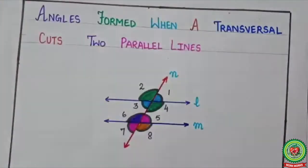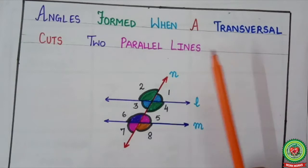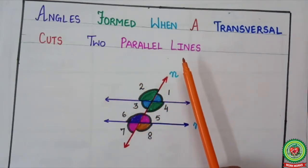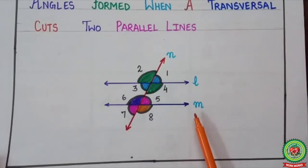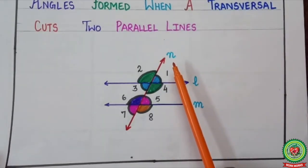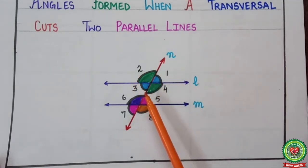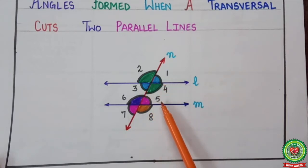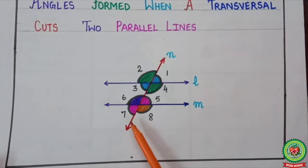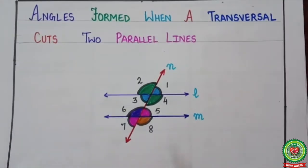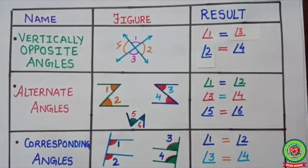How many angles will form when a transversal cuts two parallel lines? Here l is parallel to m and n is the transversal. Let's count the number of angles formed: one, two, three, four, five, six, seven, eight. So eight angles are formed when a transversal cuts two parallel lines.